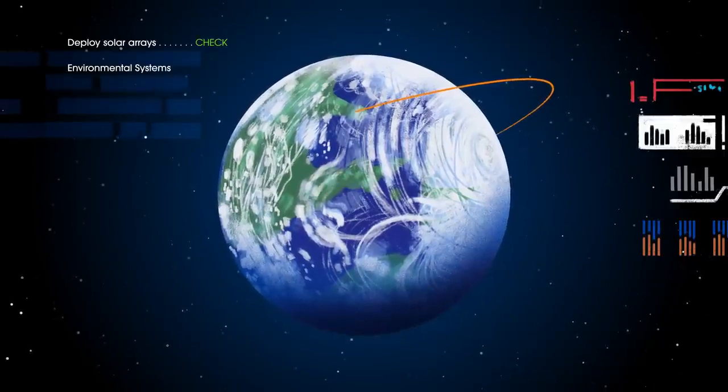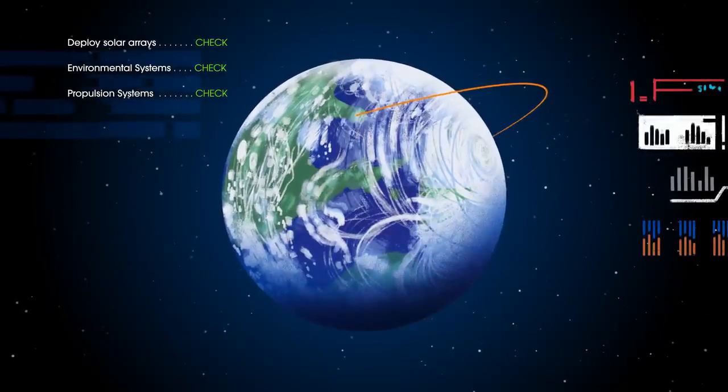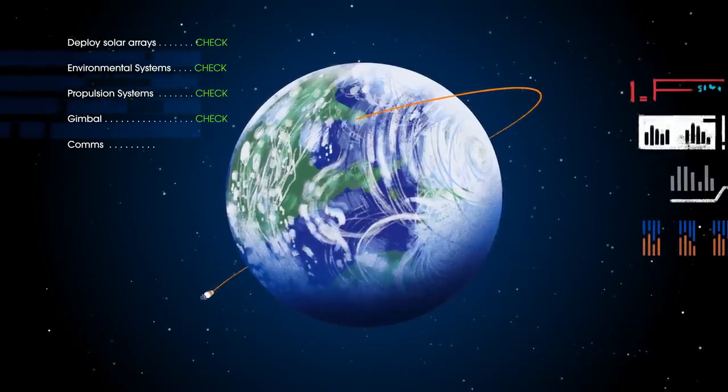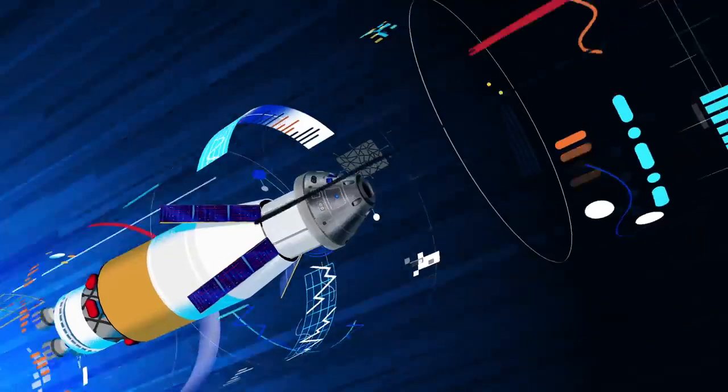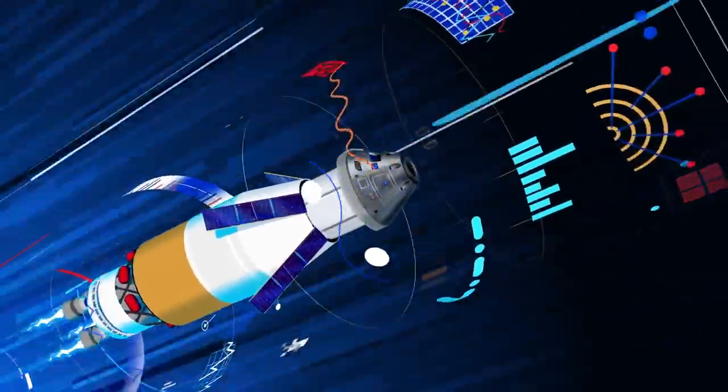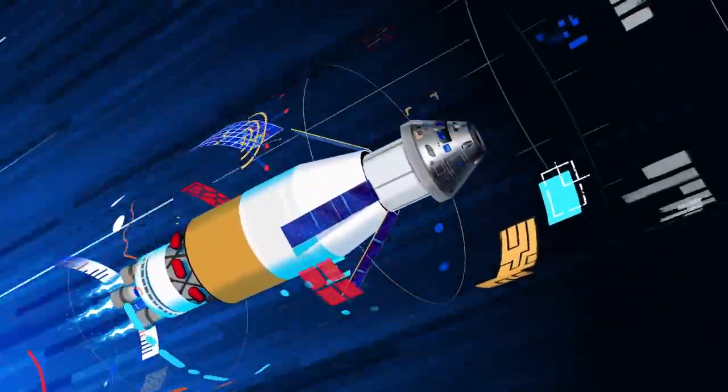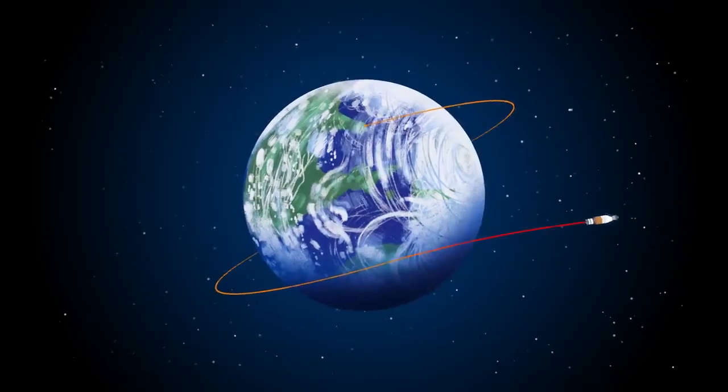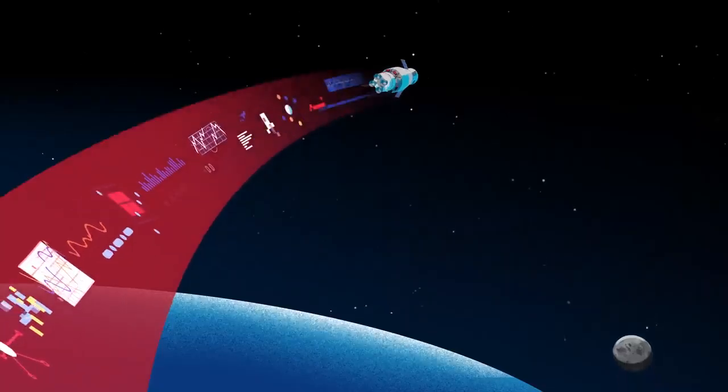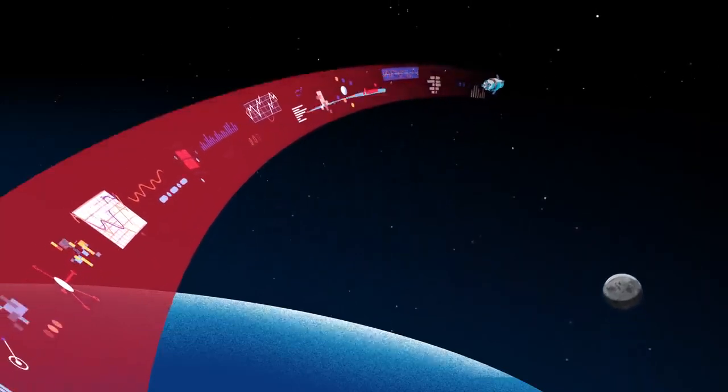Here, the crew reconfigure the spacecraft and check systems to confirm everything is ready for deep space travel. With a go from mission control, the crew reignite the exploration upper stage engines to leave Earth entirely. The exact timing of this maneuver is critical to reach a speed that can escape Earth's gravitational pull, but also put Orion on a course that will intersect the Moon days later.